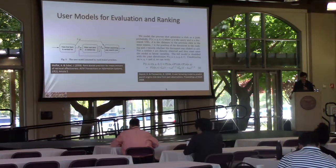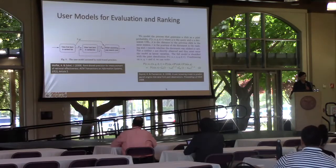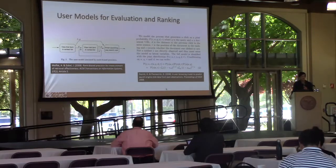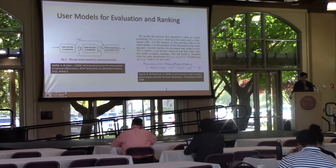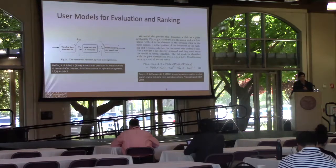We also have user models for evaluation. On one side you see RBP — Moffitt and Zobel's work where there is some model of the user. Earlier evaluation measures had pretty impoverished or missing models of users. It was just about how do we count things, how do we decide which algorithm is best — not so much what is the user actually trying to do. Now we see more and more measures incorporating user models that do interesting things like model decay, time, patience, and impatience. There's also a huge body of work developing click models and user models for ranking that incorporates a representation of the user's decision-making process to drive ranking.